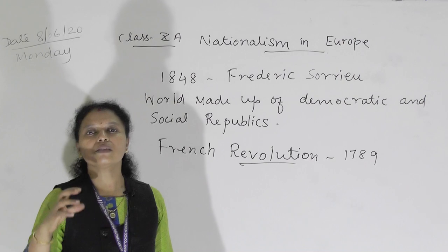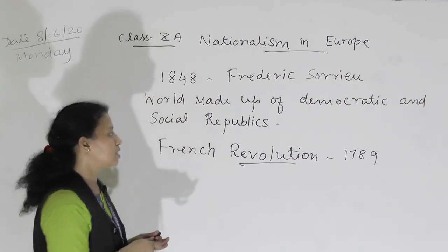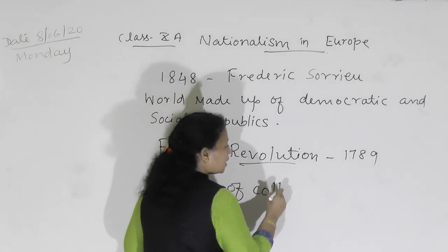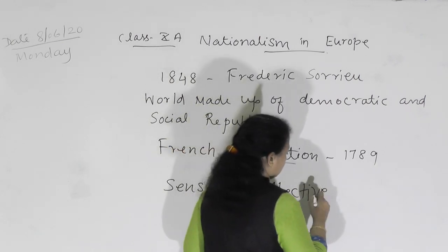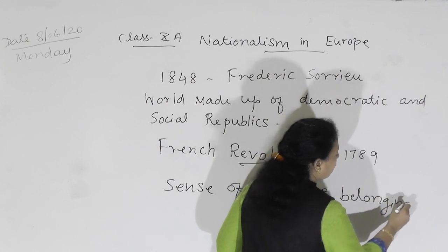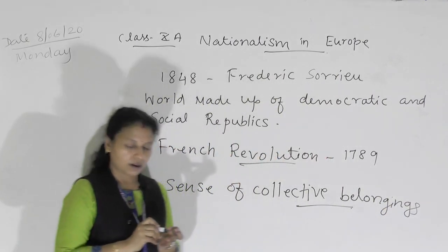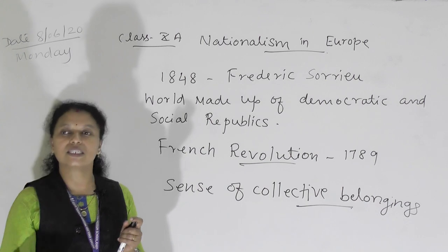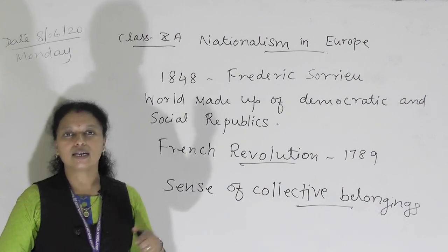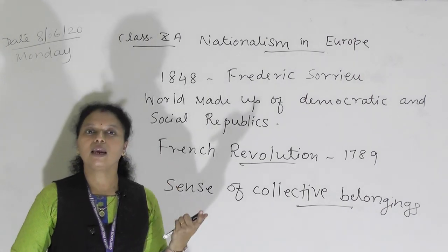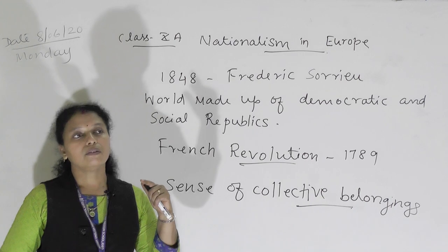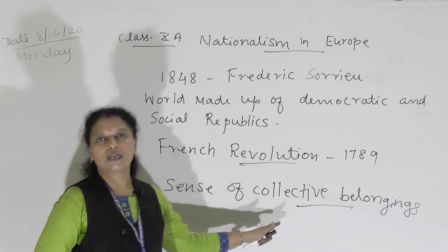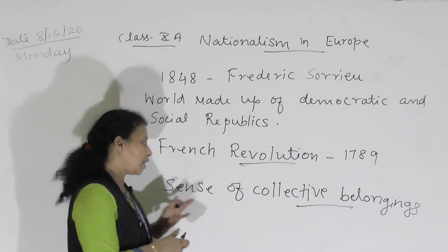What did the French Revolutionaries do to create a sense of collective belonging — which means nation state? First, the estates general, which was a meeting of the three estates, was transformed by the French Revolutionaries into the National Assembly. So the National Assembly is the new name for what was previously known as the estates general.